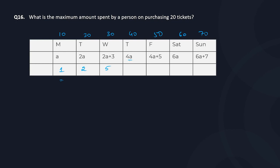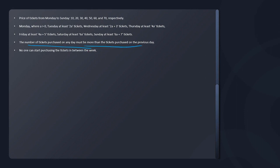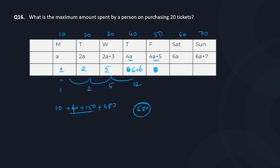Total should be 20. Here minimum on Thursday is 4A. But there's one more condition: the number of tickets purchased on any day must be more than the tickets purchased on the previous day. So I could have gone with four, but because there is a five on Wednesday, this has to be at least six. So Thursday is six. Tickets used: six plus five is 11, plus two is 13, plus one is 14. So six remaining go on Thursday, making it 12. Total spend: 20 into 2 is 40; five into 30 is 150; 12 into 40 is 480. Total is 40 plus 150 plus 480, which is 680. That is the highest I can reach.